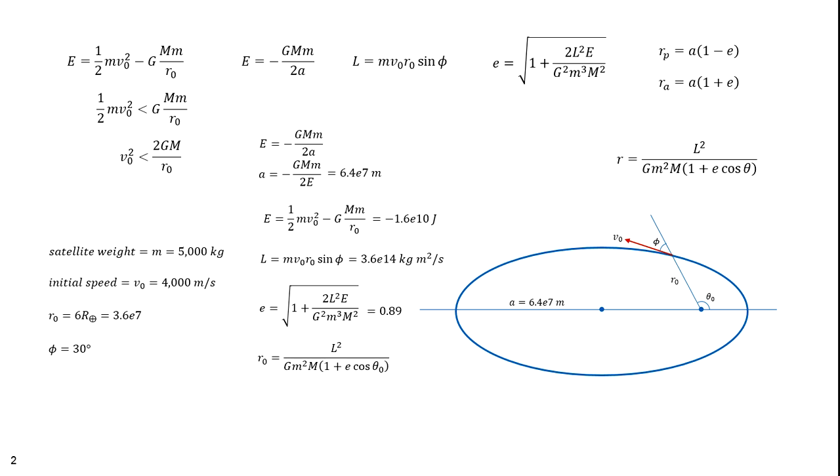The initial radial distance is R0. We can determine angle phi by solving for theta zero. Solving for cosine theta, we get 1 over e times L squared over GM squared MR0 minus 1. If you solve for theta, it equals 136 degrees. Finally, the distance to perigee and apogee are given by this equation. Perigee is 7.0 times 10 to the 6th meters. Apogee is 1.2 times 10 to the 8th meters.